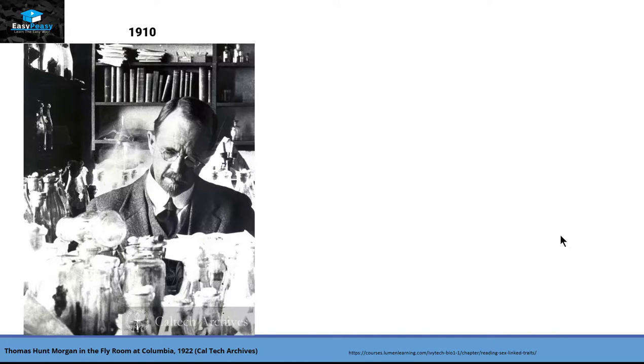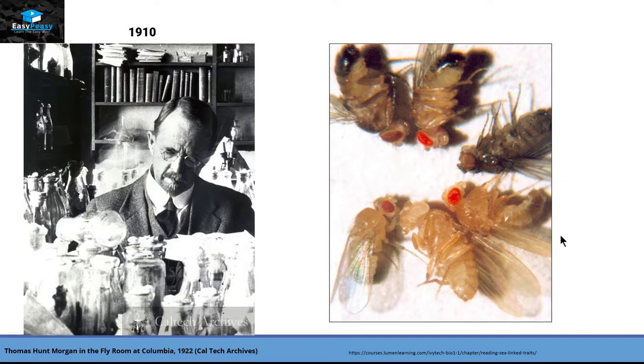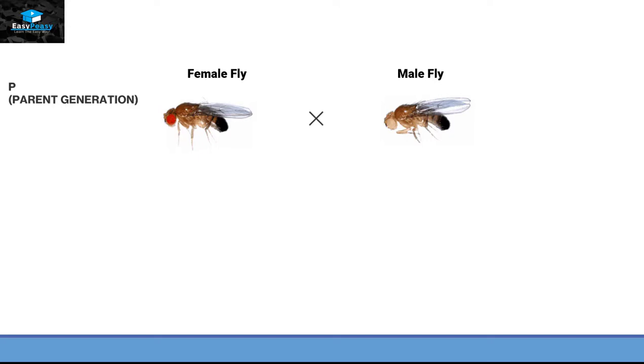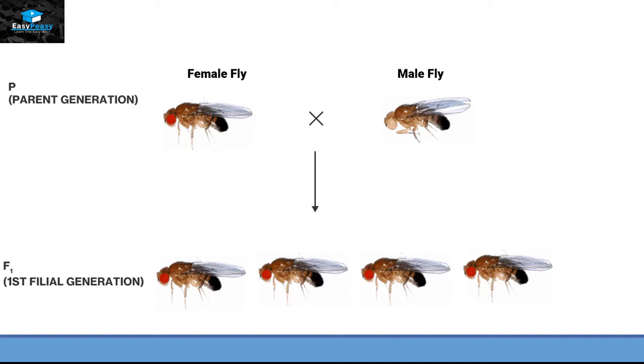So in 1910, he observed in one of his conical flasks that one of the fruit flies had white eyes instead of red. So he repeated Mendel's experiment on that fruit fly. He did the cross fertilization of this male fly with a red-eyed female fly. And the results were that the first filial generation had red-eyed flies. This observation is quite similar to Mendel's experiment.